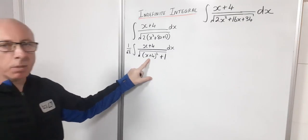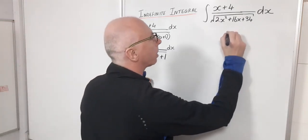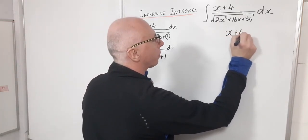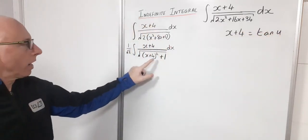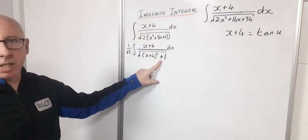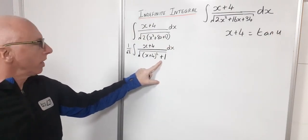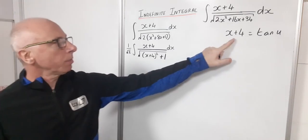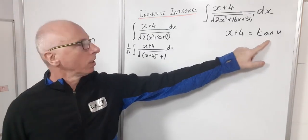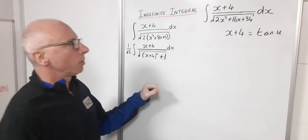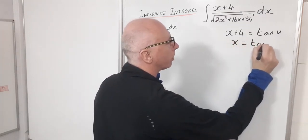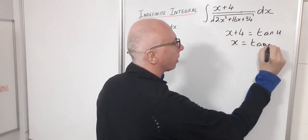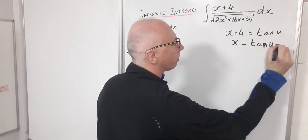So let's let x plus 4 equal tangent u. So if I do that I'll have tangent squared plus 1 which would give me a trig identity. So let's stick with that. So x plus 4 equals tangent of u. Let's get this x on its own and do our setup a little bit different to the normal. So that's tangent of u minus 4.